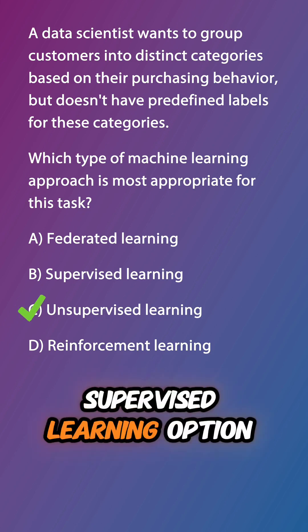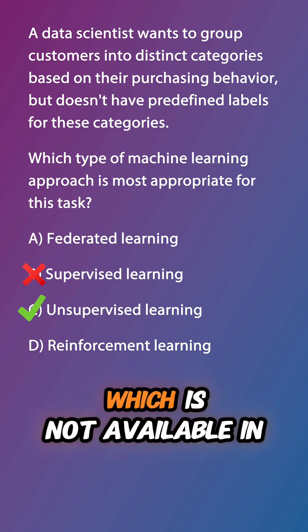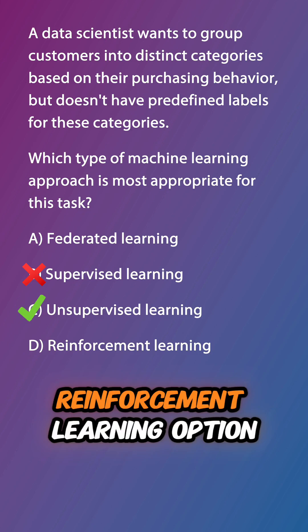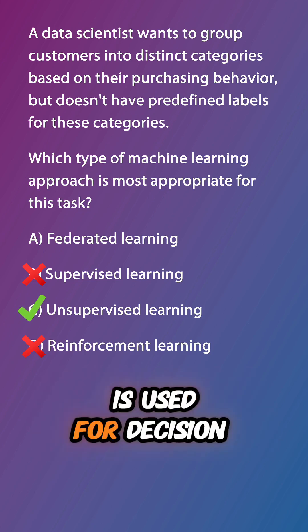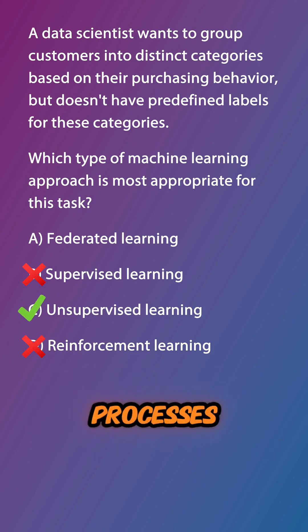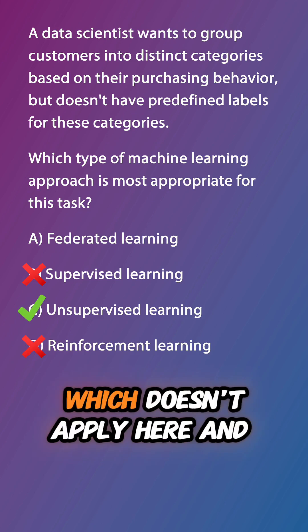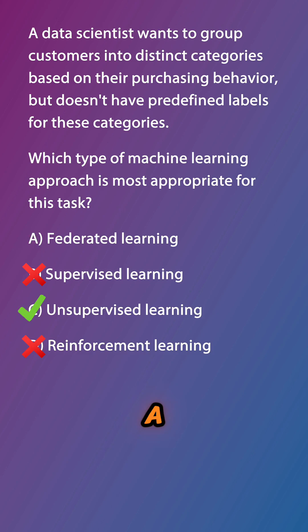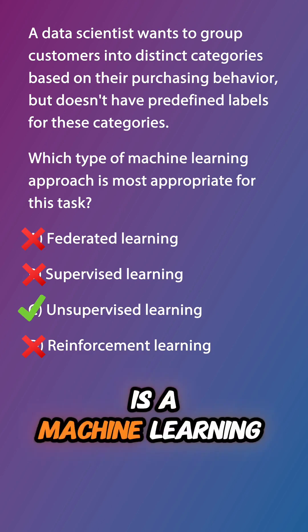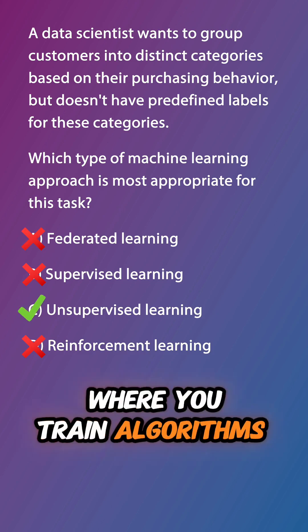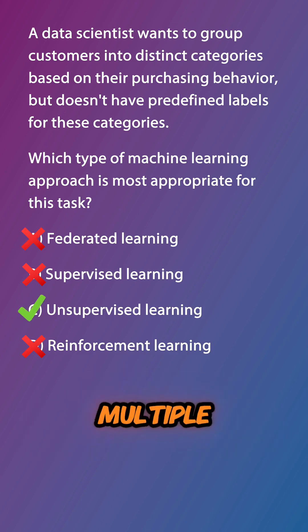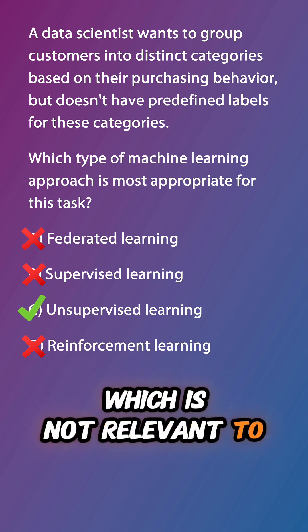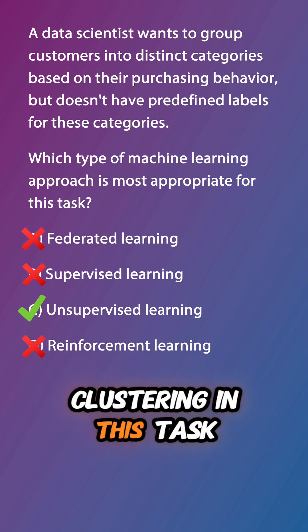Supervised learning, option A, requires labeled data, which is not available in this scenario. Reinforcement learning, option C, is used for decision making processes in interactive environments, which doesn't apply here. And federated learning, D, is a machine learning technique where you train algorithms across multiple decentralized devices holding local data samples, which is not relevant to clustering in this task.